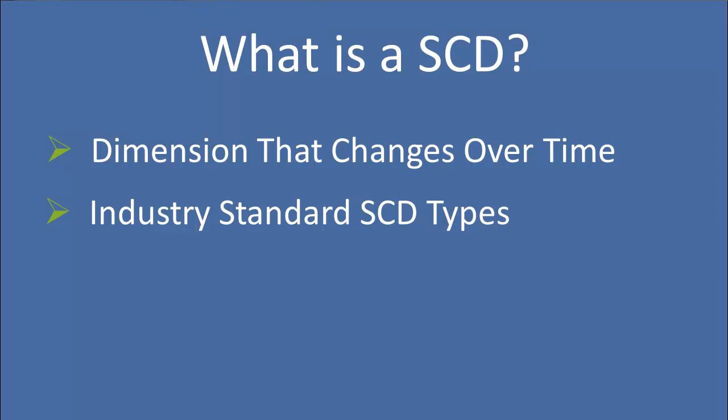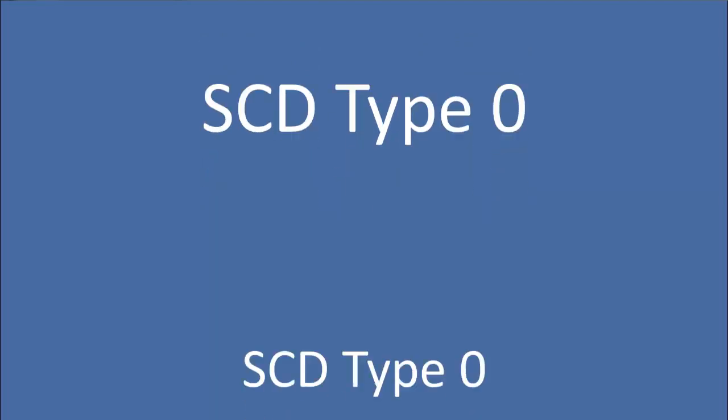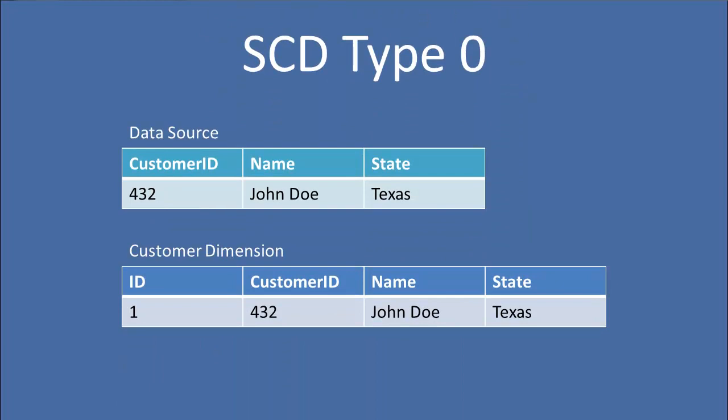Basically, it's just a dimension that changes over time. There are some industry standard slow change dimension types that help us keep track of different values across time for our dimensions. So let's start out by talking about slow change dimension type 0. A type 0 dimension does not update a value if it changes. For example, here we have a data source on top and our customer dimension on bottom, just showing a single record.